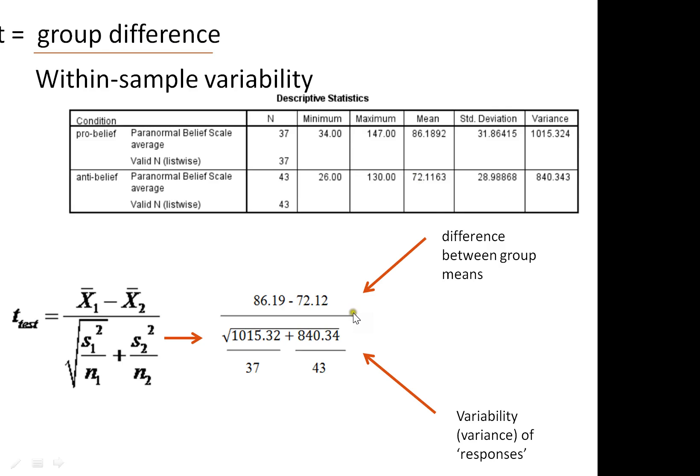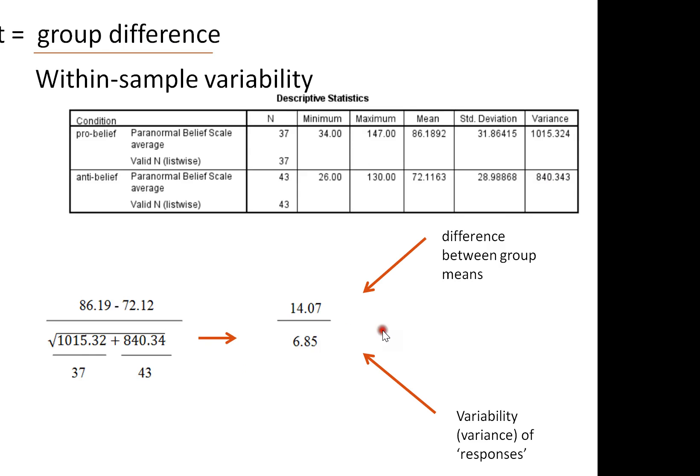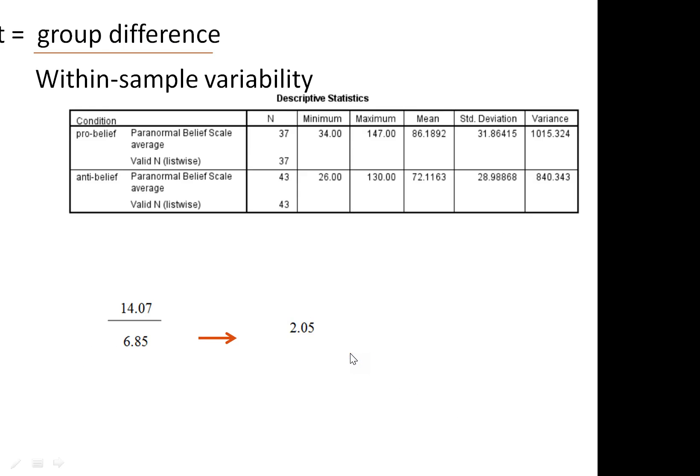We subtract the mean of group two from the mean of group one, divide that by the variance of group one, divided by the number of observations, add the variance of group two, divided by the number of observations, and then we take the square root of that number. At the other end, we end up with 14.07, the difference between the two groups, divided by 6.85, which is our proxy for within sample variation. Ultimately, that gives us a t-value of 2.05.